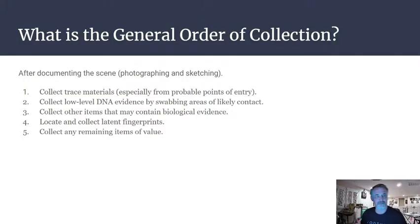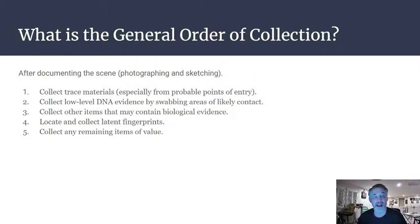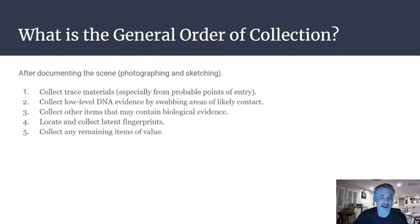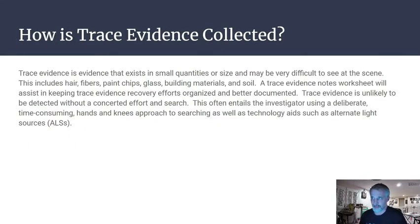What is the general order of collection? After forensic photography and sketching the scene, you start collecting materials. First, you collect the most transient and fragile evidence — trace materials, especially from probable points of entry. Then collect low-level DNA, then items containing biological evidence like blood and semen, then fingerprints, and finally any other remaining items of value — the larger, less fragile items.